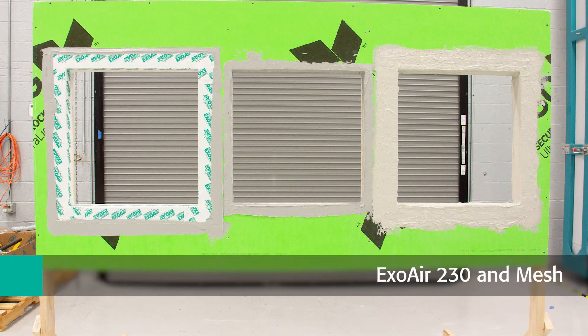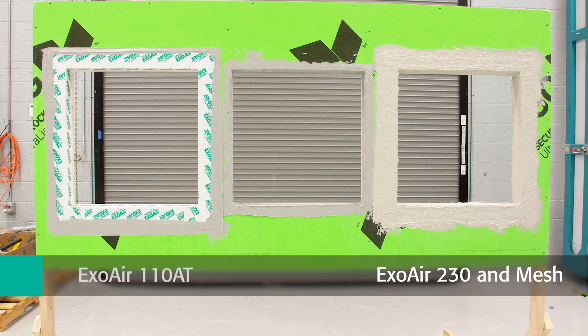The use of ExoAir 230 Fluid Air Barrier Membrane and Mesh, the Sheet Applied or Peel and Stick Air Barrier ExoAir 110AT, or lastly the Trowelable Urethane Sealant Dymonic 100.